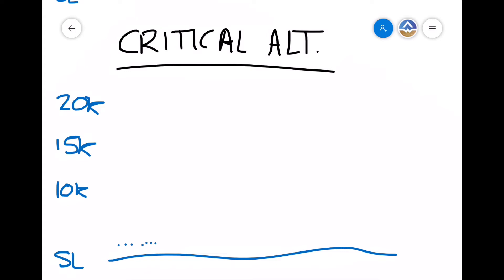So from the diagram before, we saw that sea level has nice dense air, 10,000 feet gets a bit less dense, 15,000 feet less dense again. But this isn't a problem because our turbocharger just compresses all of this air back down to sea level pressure.